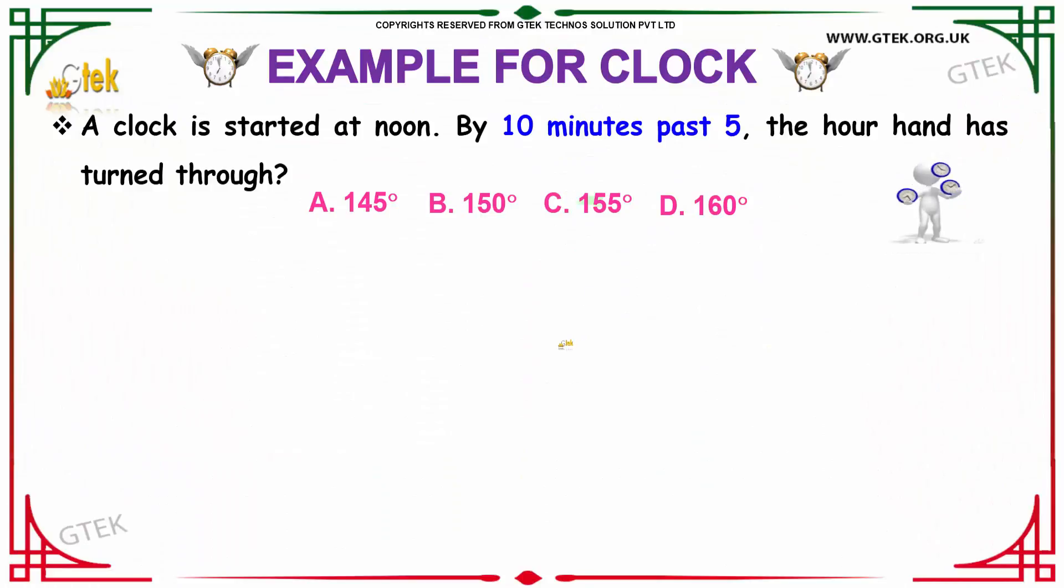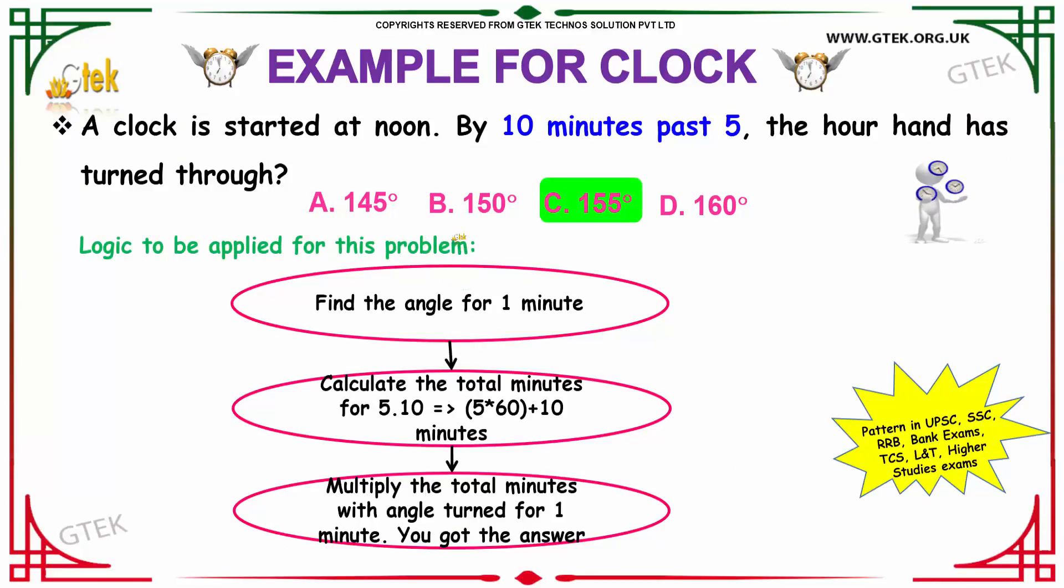Moving on to our next example over here. A clock is started at noon, that is you are starting a clock at noon. And by 10 minutes past 5, the hour hand has turned through how much degrees? 10 minutes past 5 is nothing but 5:10, 5 hours and 10 minutes.